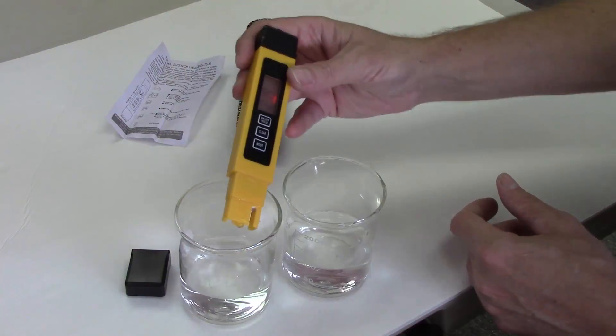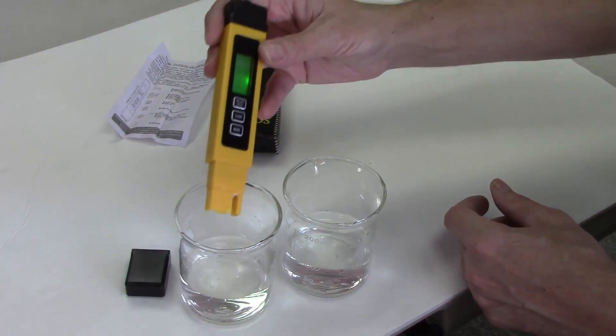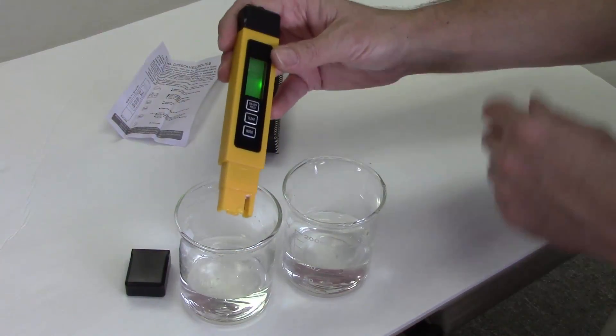The first one I put it into rang out at 219 parts per million and it turned red.